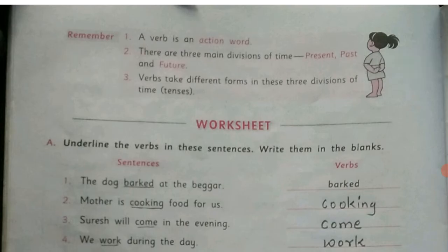Now remember: a verb is an action word. When we come to know an action with the help of a word, that word is a verb. There are three main divisions of time — present, past, and future. Verbs take different forms in these three divisions of time.